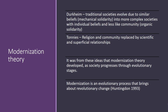It's from these ideas that modernization theories developed, as society progresses through evolutionary stages from the industrial revolution. We are now on the verge of what's been called the fourth industrial revolution with the invention of artificial intelligence, which will bring changes to our society. Another modernization theorist, Huntington, suggested that modernization is an evolutionary process that will bring about revolutionary changes. Functionalism is a theory of evolution, even though we tend to suggest that functionalists prefer traditional norms and values.